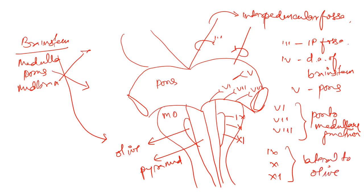To summarize: nerve three originates from the interpeduncular fossa; nerve four from the dorsal aspect of the brainstem; nerve five from the pons; nerves six, seven, and eight from the pontomedullary junction; and nerves nine, ten, and eleven from lateral to the olive.